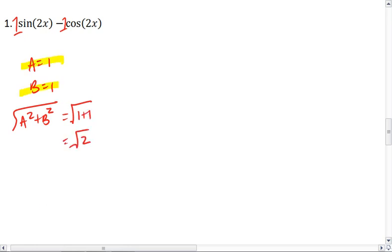Those are our three important numbers. What we want to do next is determine what sine of phi is and what cosine of phi is. Sine is our b value over our square root of a squared plus b squared value, which gives us 1 over root 2, which equals root 2 over 2.